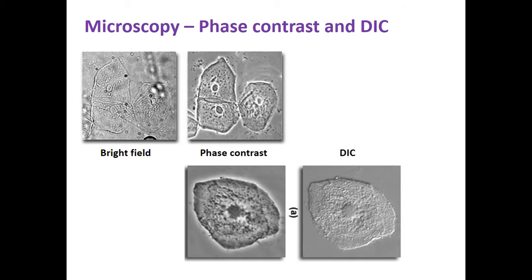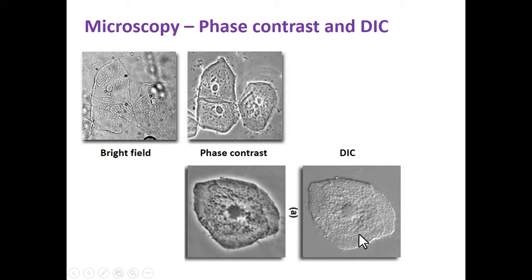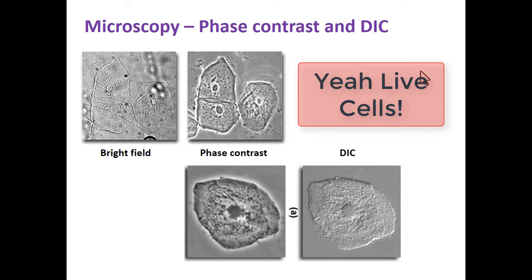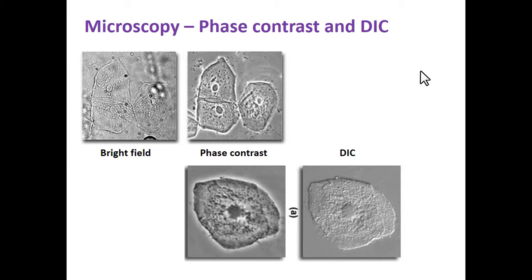We can enhance light microscopy a little bit by using, as shown here, phase contrast, which gives you a little bit of depth, or differential interference contrast, which really gives you more of a 3D surface picture. Here's regular bright field that you would see a cheek cell if you didn't stain it, here's phase contrast, and then differential interference contrast. The nice thing about phase contrast and differential interference contrast is that you can look at live cells — you can use these to look at things like paramecium and amoebas and cells that you have not killed yet. But again, not a whole lot of detail.